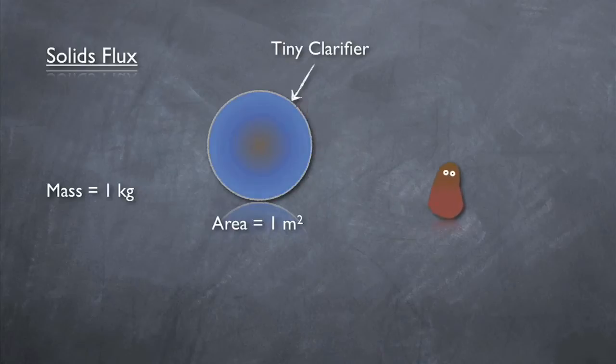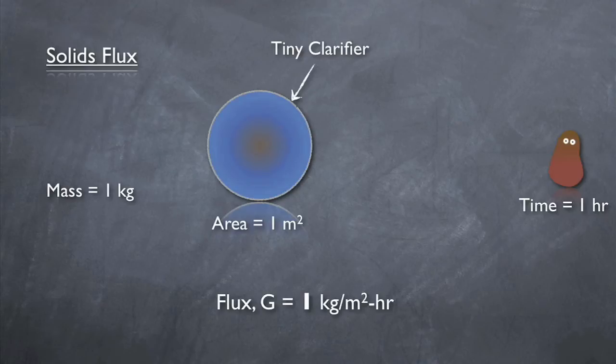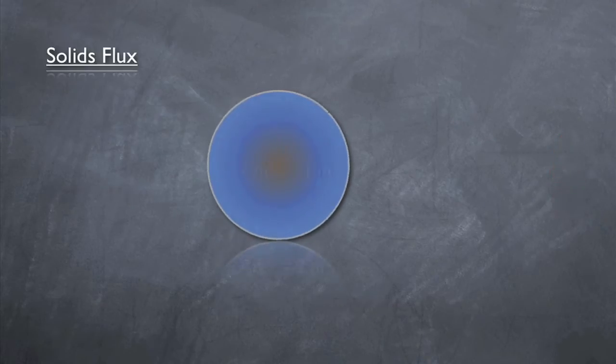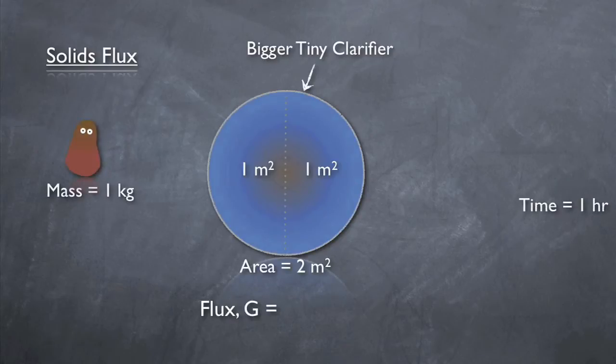Imagine a tiny clarifier with a surface area of only one square meter. The flux in this case would be equal to the total mass of solids passing through the clarifier in one hour. So if one kilogram of mass were to pass through in one hour, the flux would be one kilogram per meter squared hour. Now if the surface area of the tiny clarifier was doubled, but the same mass of solids passed through in the same amount of time, the solids flux would be half.